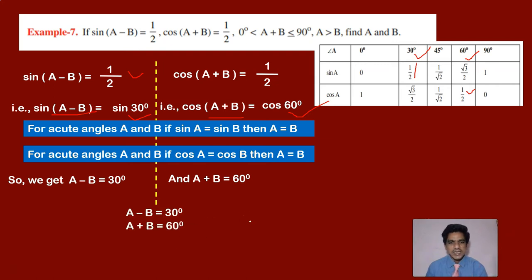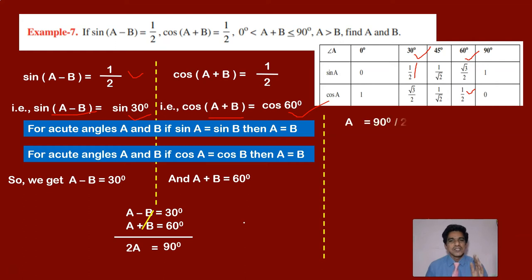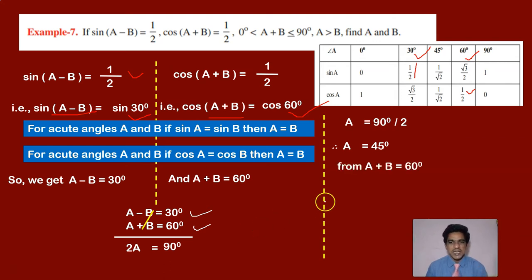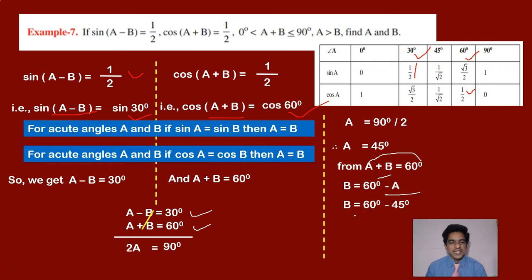We have A minus B equals 30 degrees and A plus B equals 60 degrees. Adding the two equations, the B terms cancel and we get 2A equals 90 degrees. Therefore A equals 45 degrees. Substituting into A plus B equals 60: B equals 60 minus 45, therefore B is 15 degrees.